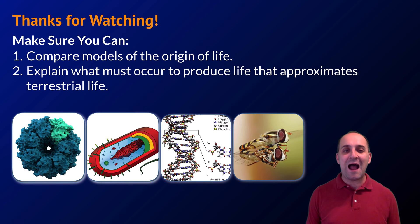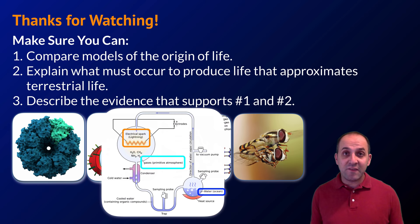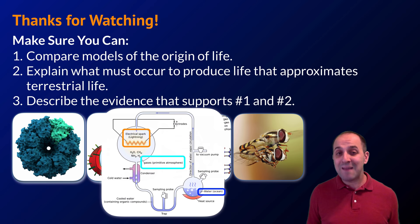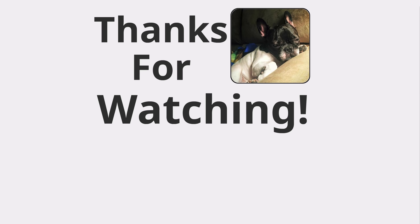At the end of this video, make sure you can: compare the two models of the origin of life — panspermia and abiogenesis; explain what has to happen to produce life resembling what we see on Earth today; and describe the evidence supporting these models and the steps from non-living matter to living systems. If you have questions, write them down so you can get answers. Thanks for watching — have a great day!